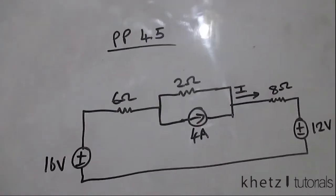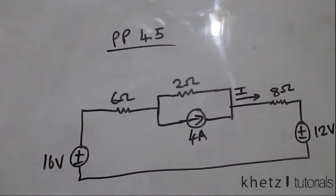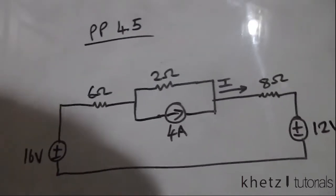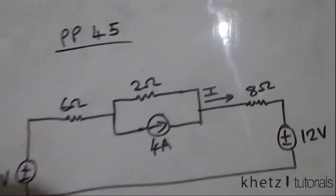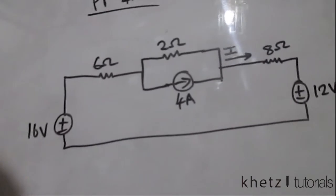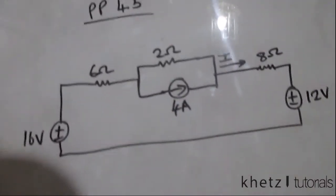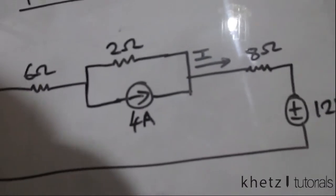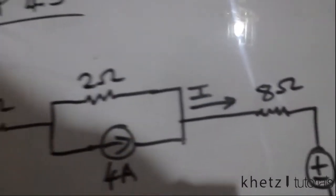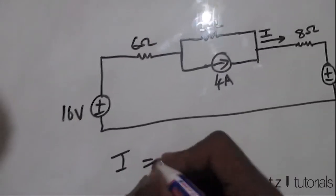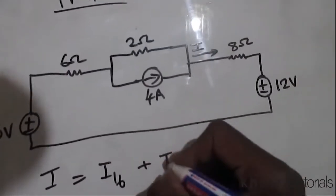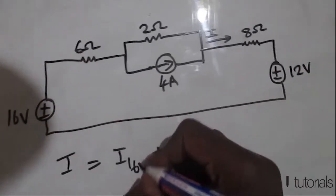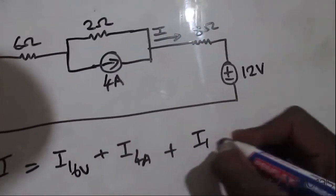Welcome to CAT Tutorials. In this video we'll be covering practice problem 4.5. The question says: using superposition, find the value of i, which is the current indicated in the circuit. We have three independent sources, so we expect three contributions to i: the contribution of the 16 volts, plus the contribution of the 4 amperes, plus the contribution of the 12 volts.